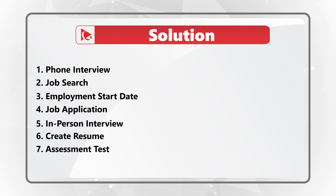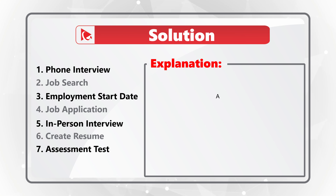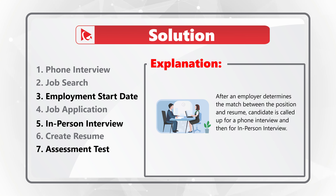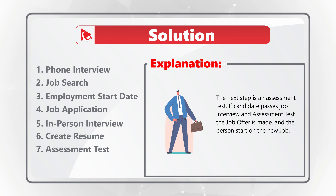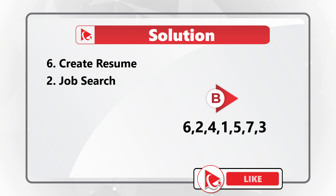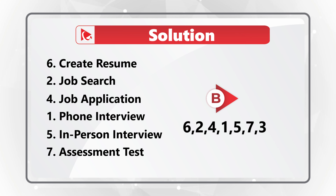In the typical job search process, after preparing the resume the job seeker can start searching and applying for a position — this is called the job application process. After an employer determines a match, the candidate is called for the phone interview and then the in-person interview. The next step is an assessment test. If the candidate passes both the interview and the assessment test, a job offer is made and then the person starts on the job.